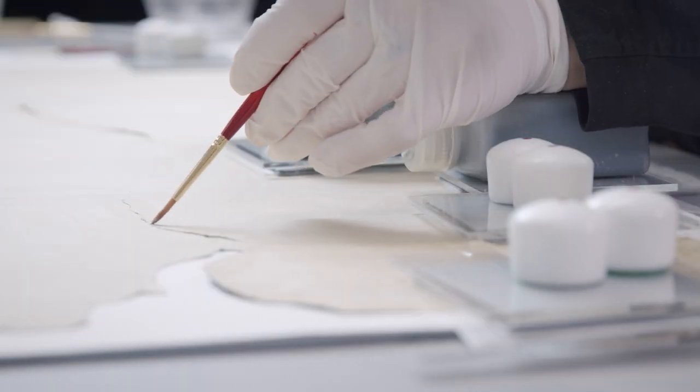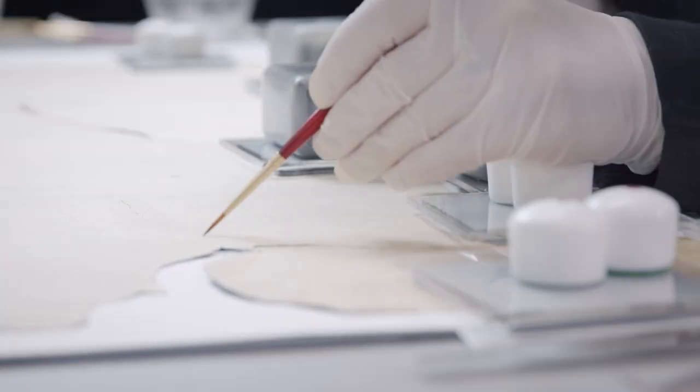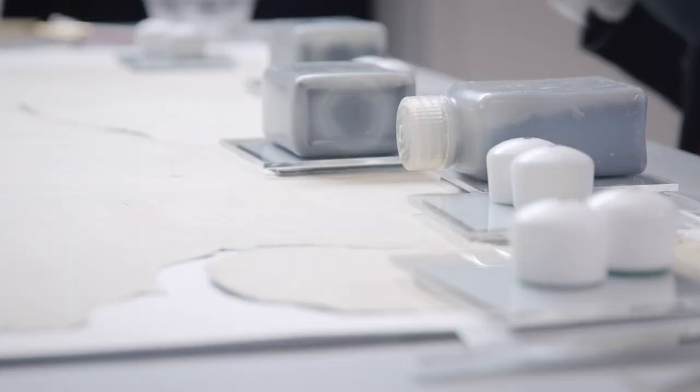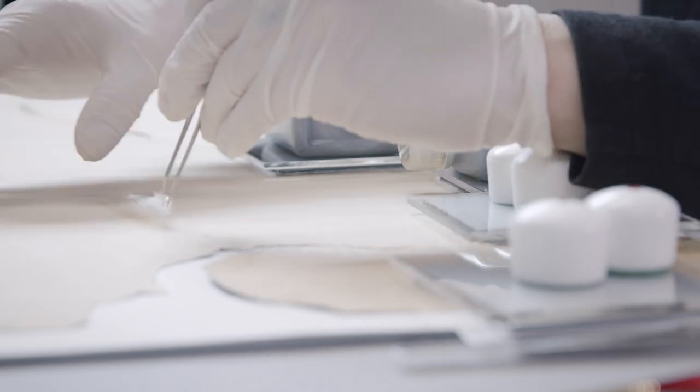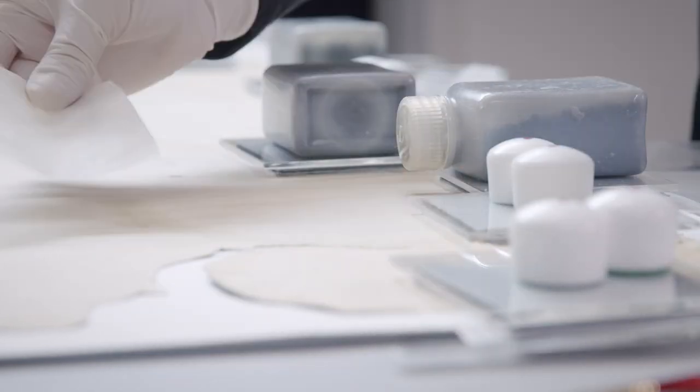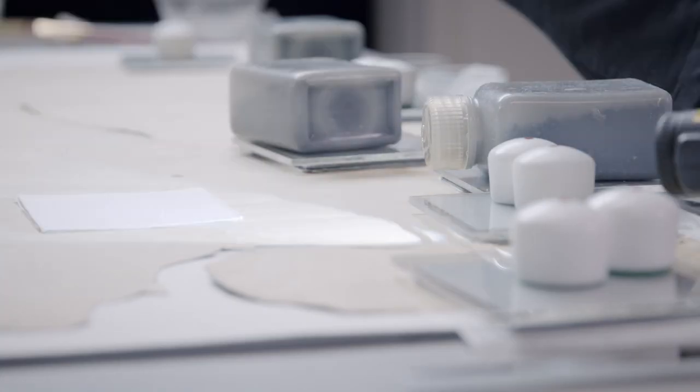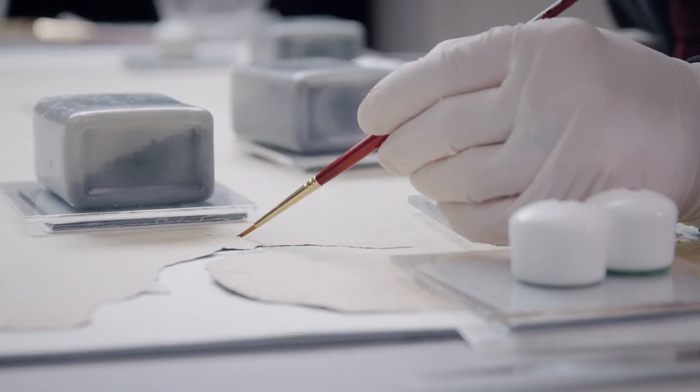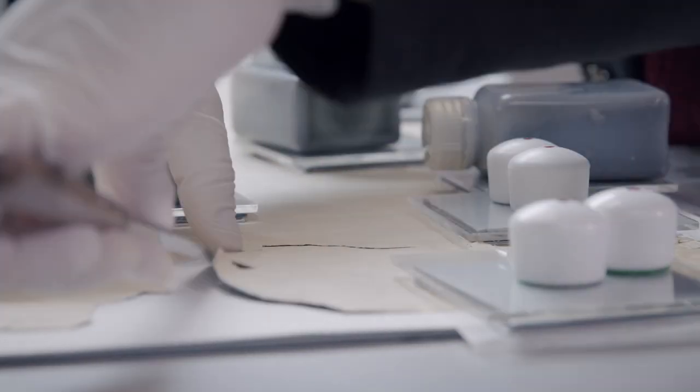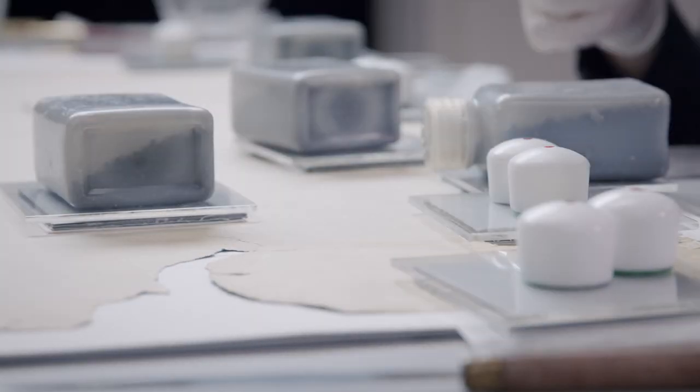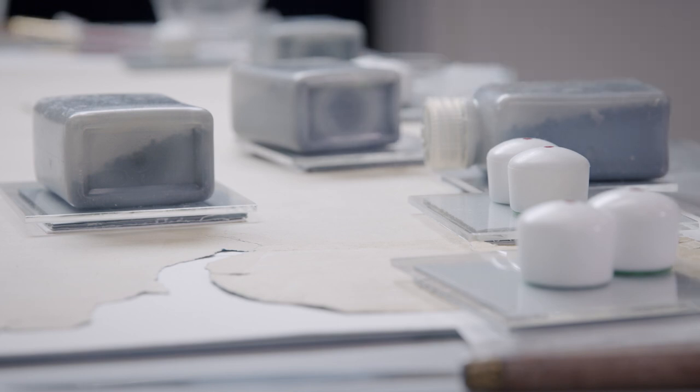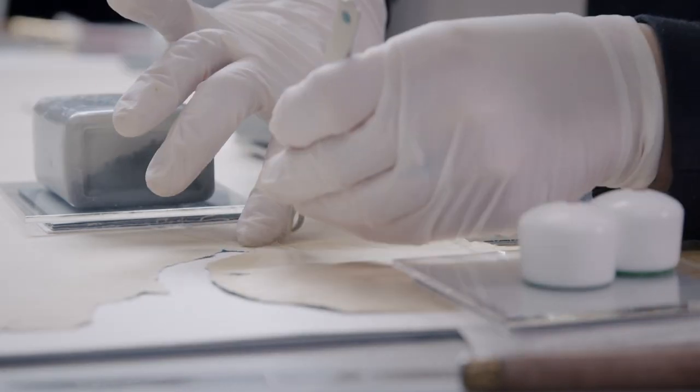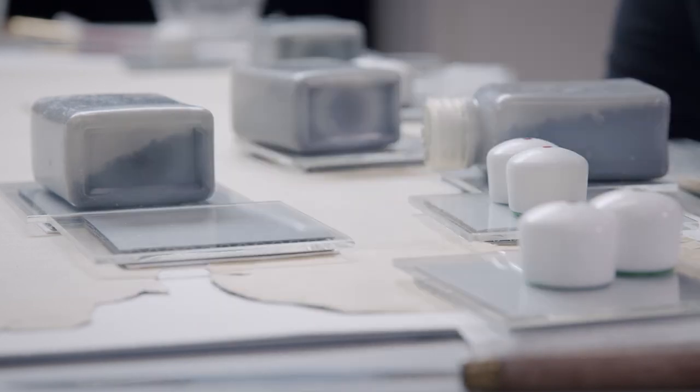Once clean, the tears were repaired from the back using wheat starch paste and Japanese paper. The paste was applied to strips of Japanese paper, which were positioned over the tears and lightly burnished into place. The mended areas were dried under blotting paper and weight to prevent the new mends from causing any distortions as they dried.